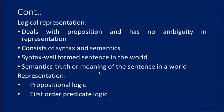Logical representation deals with propositions and has no ambiguity in representation. It consists of syntax and semantics — syntax means well-formed sentences in the world, and semantics means the truth or meaning of sentences in the world. Knowledge representation is very important because humans are best at understanding, reasoning, and interpreting knowledge. Machines must also do these things, which is what knowledge representation and reasoning addresses. Representations can be expressed using propositional logic and first-order predicate logic.